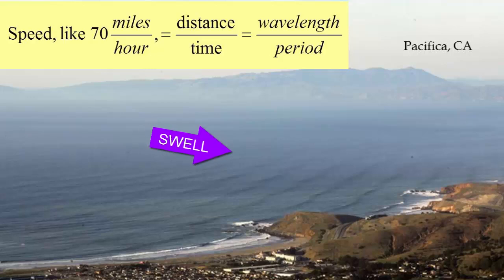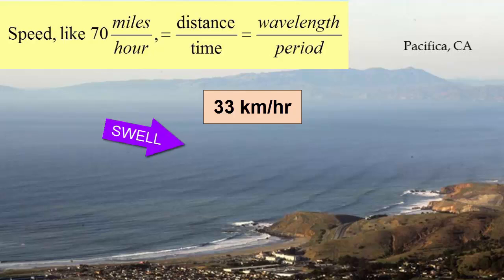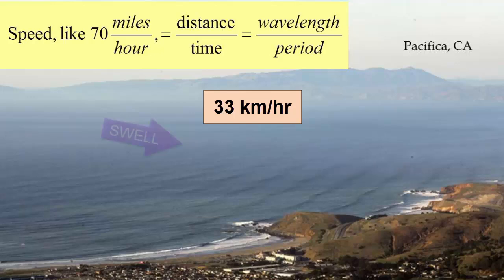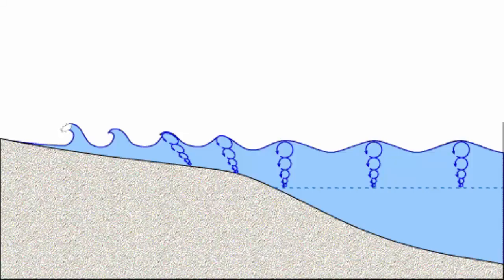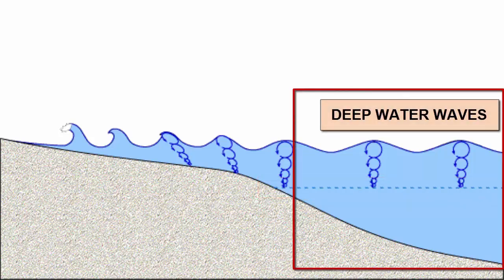Swells that approach our beach tend to move at speeds more like 33 kilometers per hour. However, that speed will slow once the wave feels bottom — which means once it enters water shallower than its wave base. We call waves that move through water deeper than their wave base deep water waves. Note that this definition has nothing to do with whether we think the water is deep or shallow, but only if the wave does. If the wave's base is above the seafloor, it feels like deep water, and there's no interaction between the wave and the seafloor.